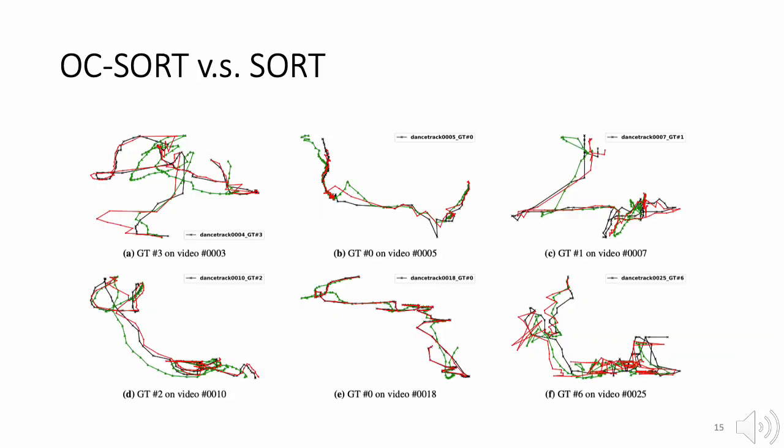This is the trajectory from some test data samples. The black trajectories are the ground truth, the red trajectories are by OC-SORT, and the green trajectories are by SORT. We could see that in most cases, trajectories by OC-SORT are obviously closer to the ground truth.